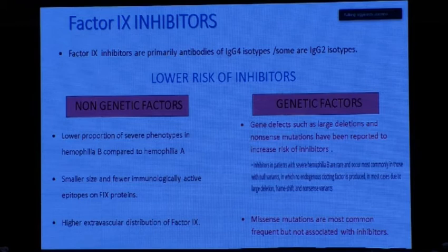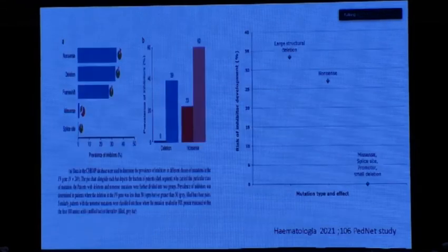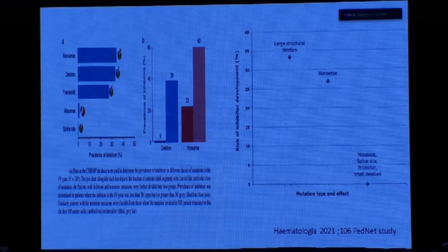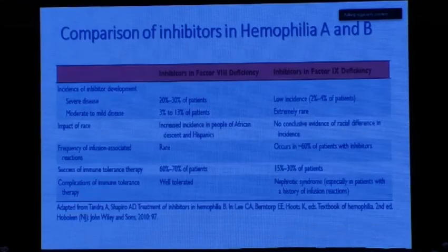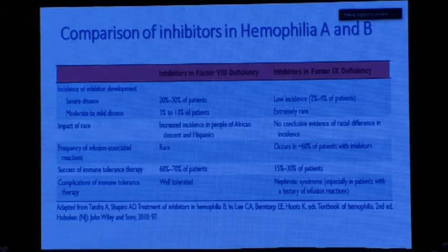For genetic factors: missense mutation is the most common mutation in Hemophilia B — not large deletions or null mutations — so the inhibitor risk and percentage are low. Many studies have compared inhibitor rates and genotypes. A study in Haematologica two months ago compared inhibitor rates in Hemophilia A versus Hemophilia B, including the frequency and rate of anaphylactic reactions, which occur in Hemophilia B but not in Hemophilia A.